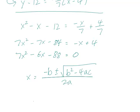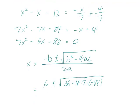And that would mean that this is going to be positive 6 plus or minus square root of 36 minus 4 times 7 times minus 88, all over 2a.